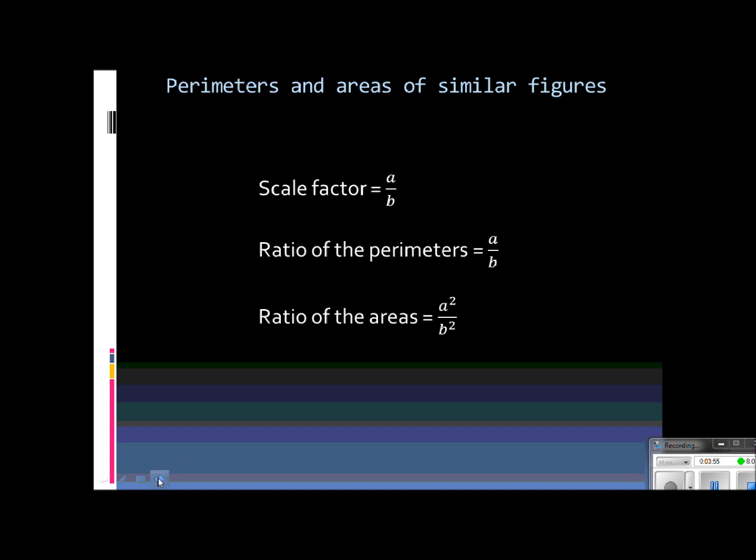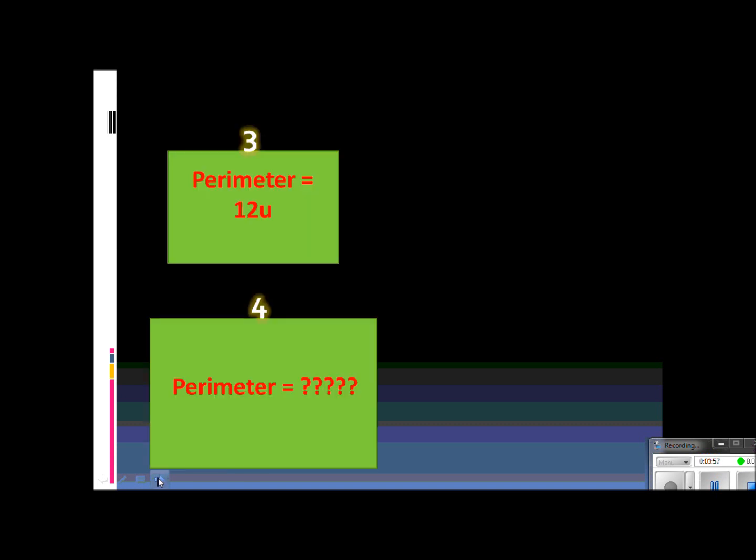Alright, let's move forward. So, we are going to use this to set up proportions. And we've done this in previous chapters, we're just going to add one new thing. Now when we set up a proportion, we would use the scale factor. So the scale factor, let's say in the examples I have here, is 3 to 4.